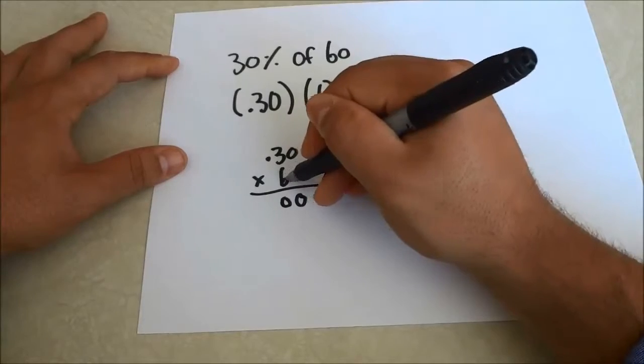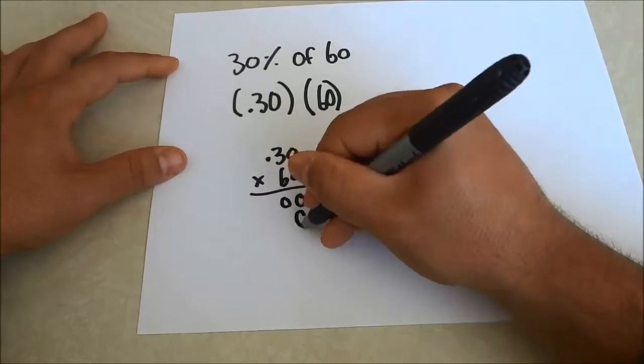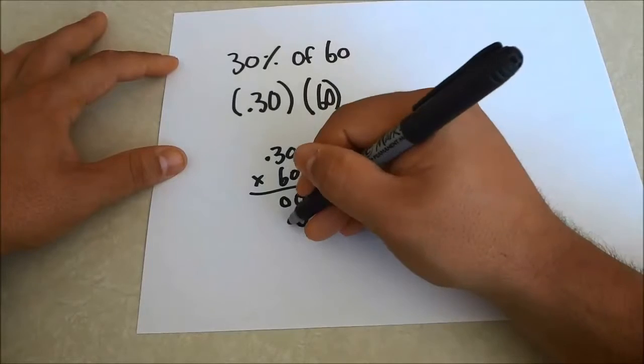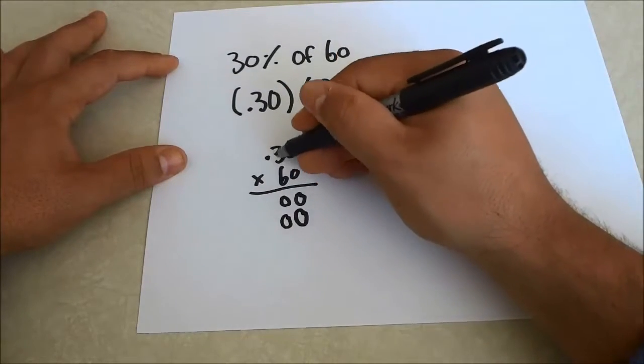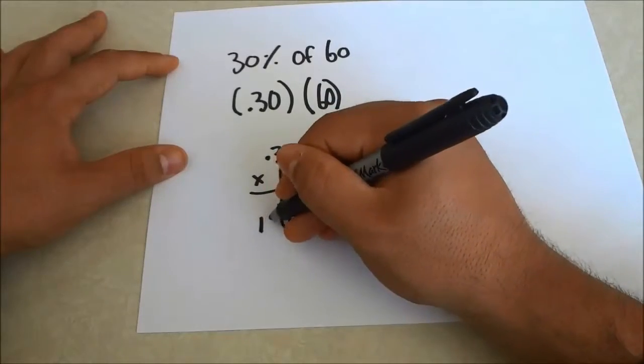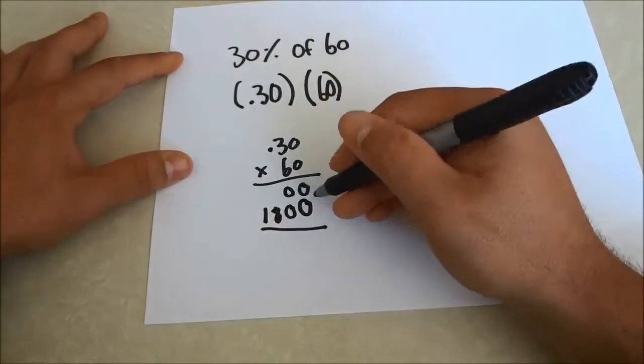Now we're going to use the 6. And when we're starting a new row we put a 0 just like that. So 6 times 0 equals 0. 6 times 3 equals 18. And because I'm at the end I can just write the 18 like that. So now I'm going to add them up.